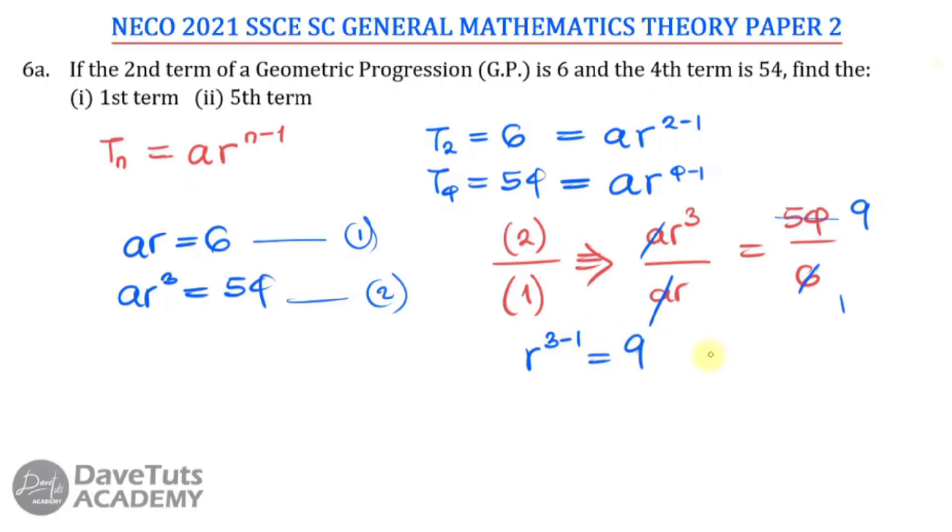3 minus 1, this is applying the laws of indices. 3 minus 1 means that we have R raised to power 2 equals 9. Therefore, R is going to be the square root of 9. Now notice students, square root of 9 is not just 3, it is plus or minus 3. You should know that. That means for this particular problem, as you are getting the solution for the positive theory, you also need to be getting the solution for the negative theory.